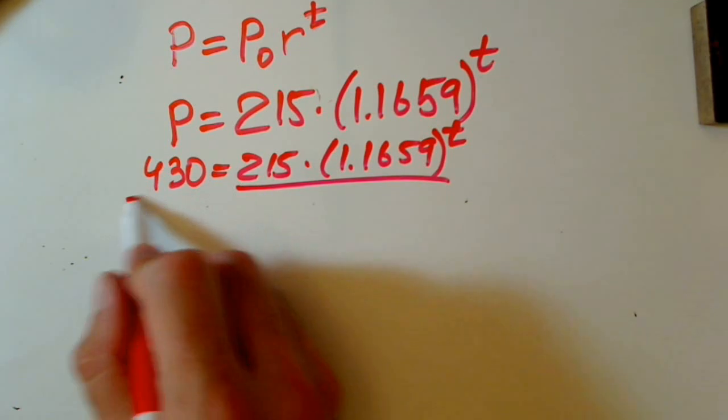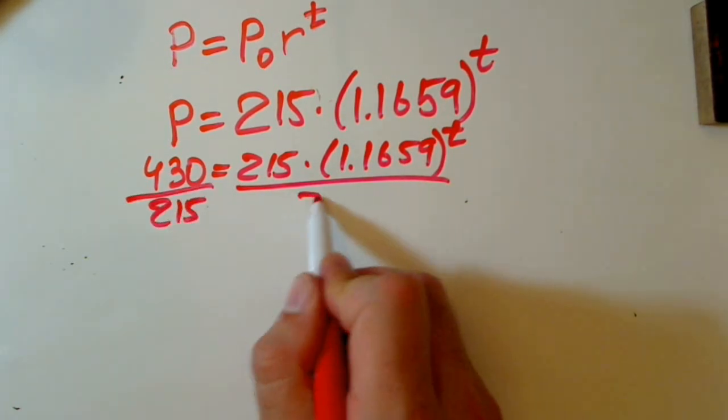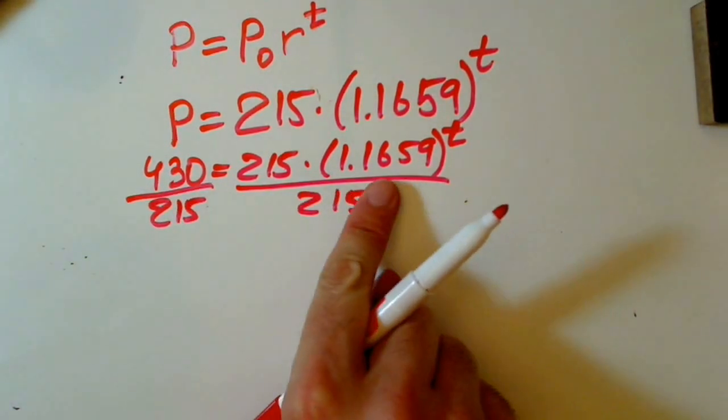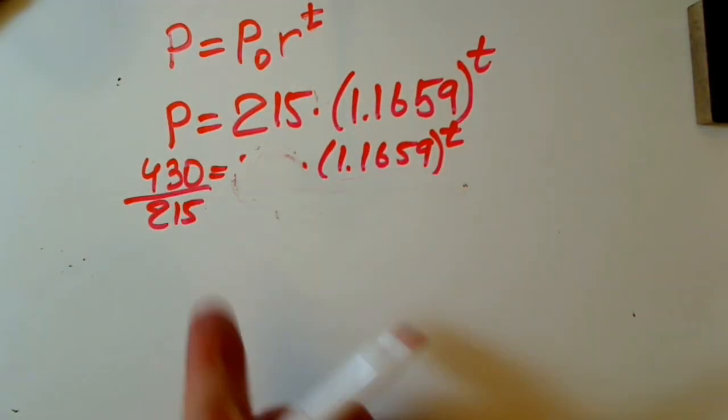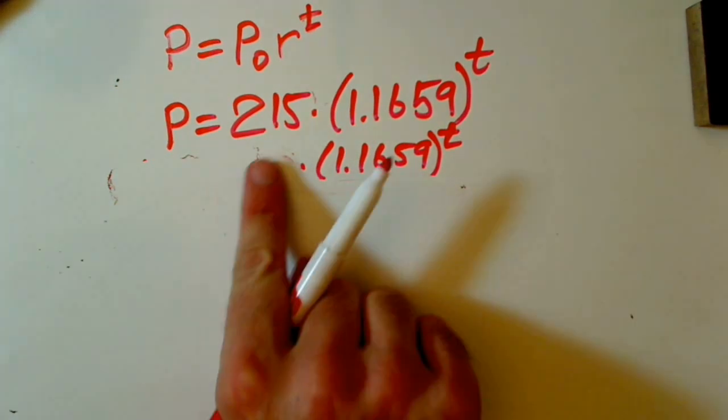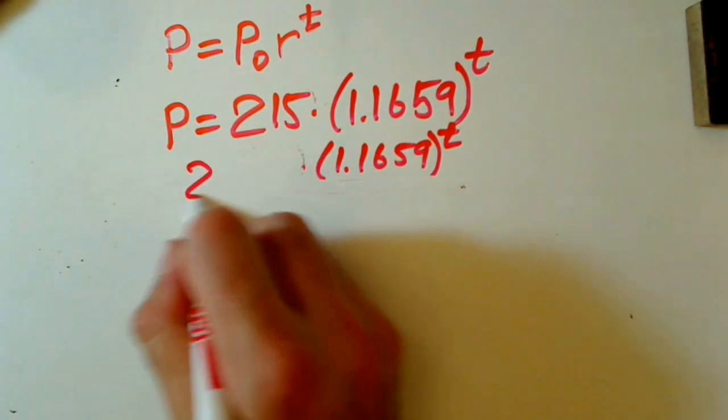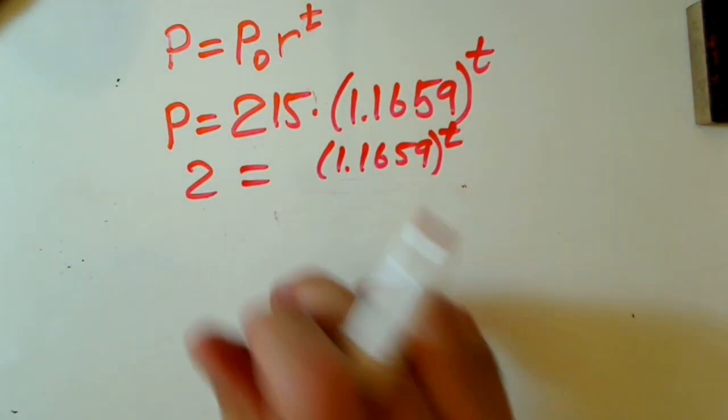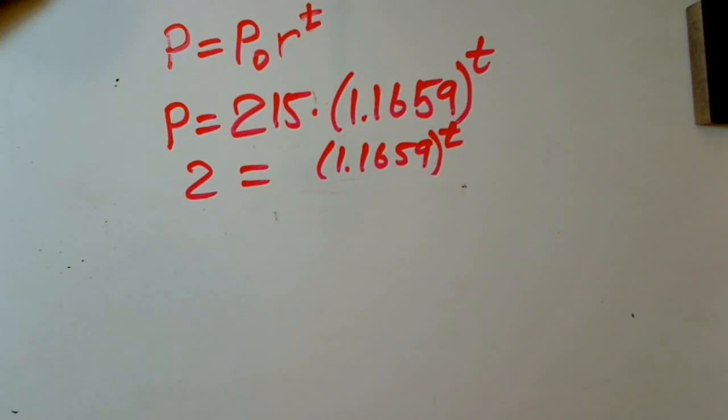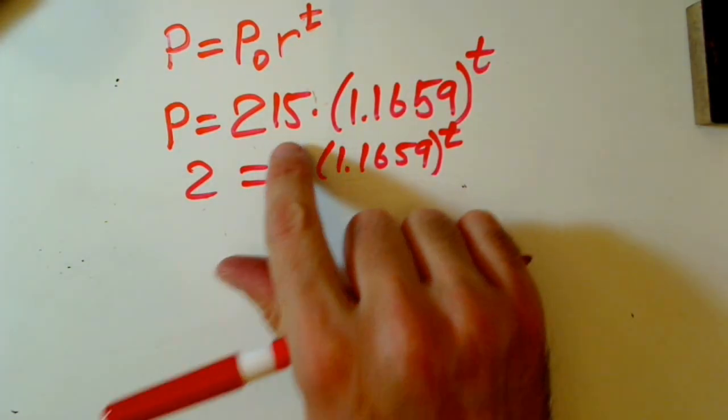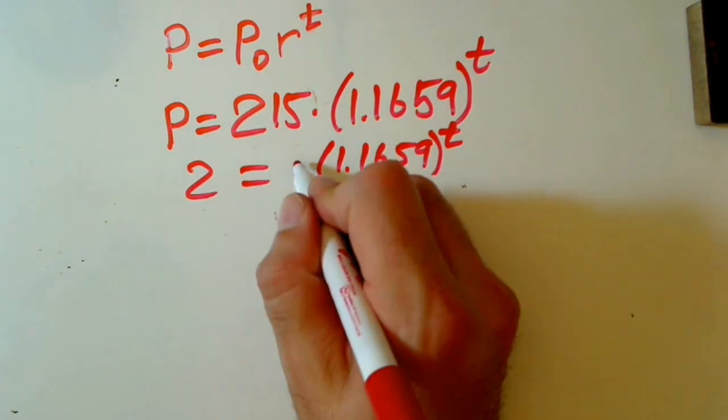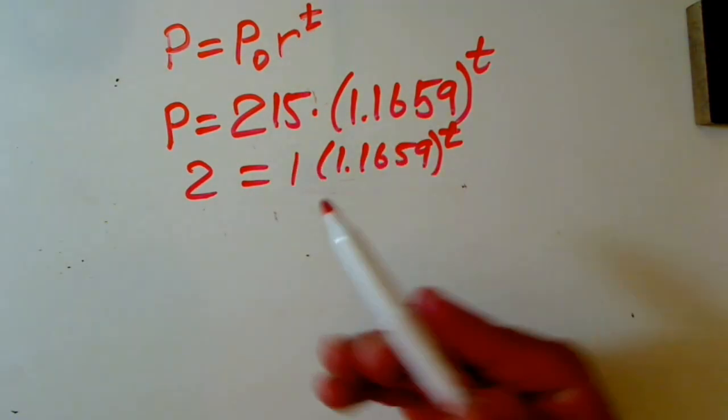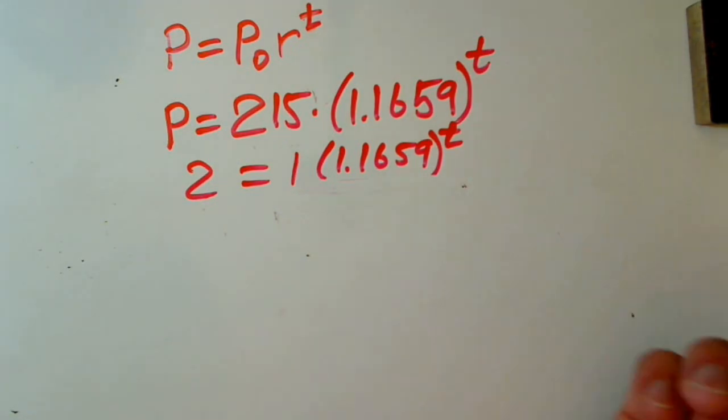Now, what do we have to do? We have to divide by 215 both sides. And you can see 215 cancels, and 430 divided by 215 is just 2. And we have 2 equals, and actually in future, you don't have to use even initial population number, because if population of bacteria will be 1, then it will be 2. We have to find this time.